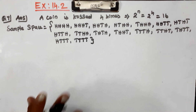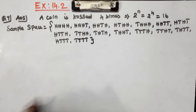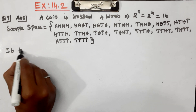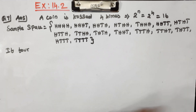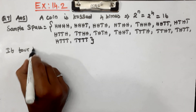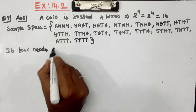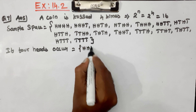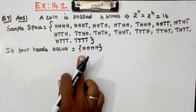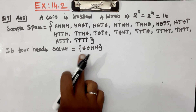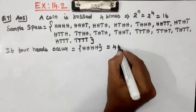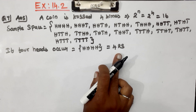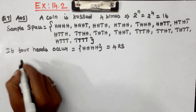Now we have options. Let's see option number 1: if all 4 tosses are heads — head, head, head, head — that is 4 heads. One head is worth Rs. 1, so 4 heads is Rs. 4 rupees. If you understand this, we will find the probability.